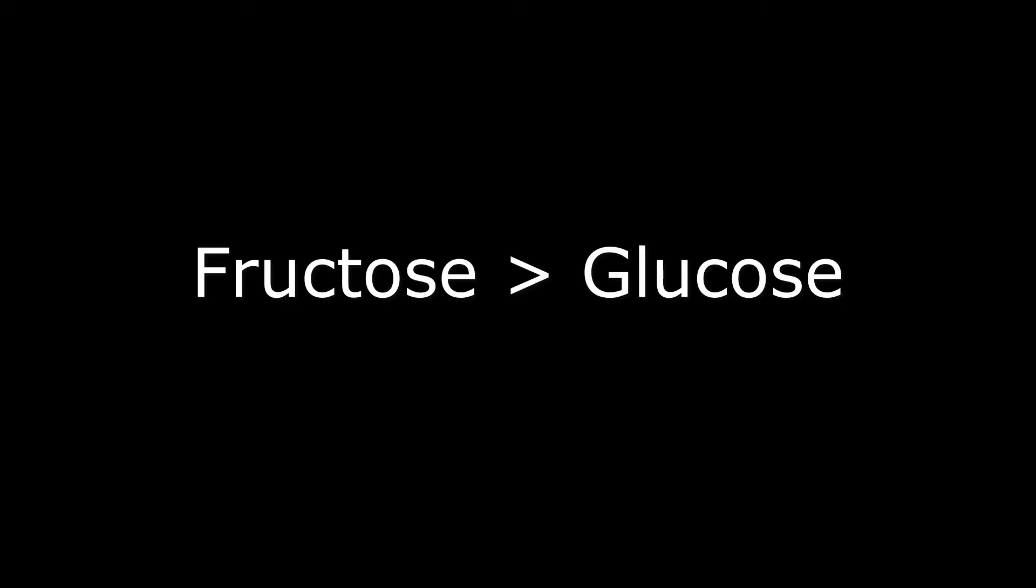The rate of fructose metabolism is more rapid than that of glucose because the trioses formed from fructose 1-phosphate bypass the phosphofructokinase-1 enzyme reaction, which is the major rate-limiting step in glycolysis.